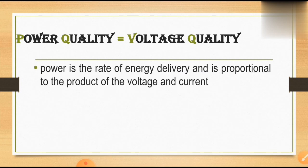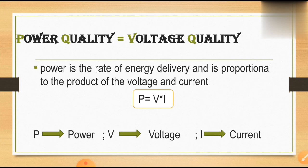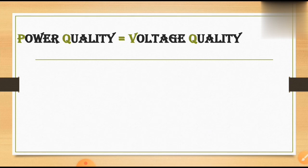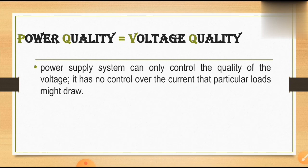According to the definition, power is the rate of energy delivery and is proportional to the product of voltage and current. The general expression is P equals V into I, where P is power, V is voltage, and I is current.